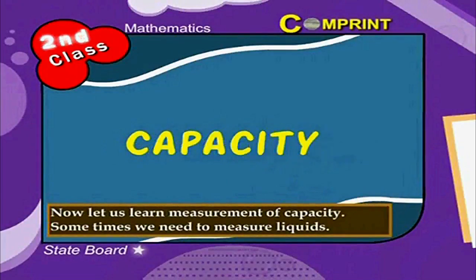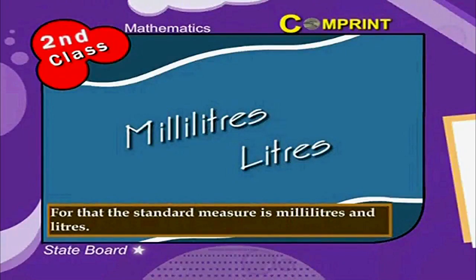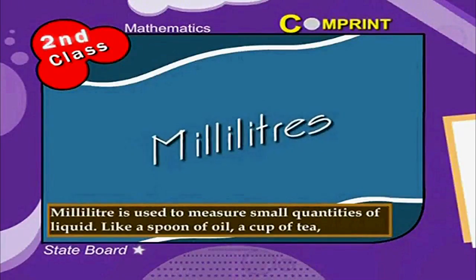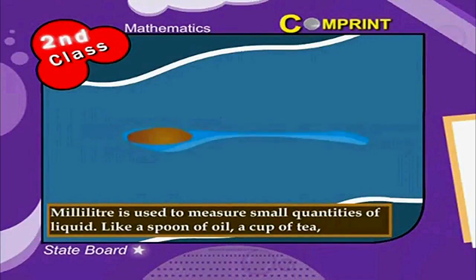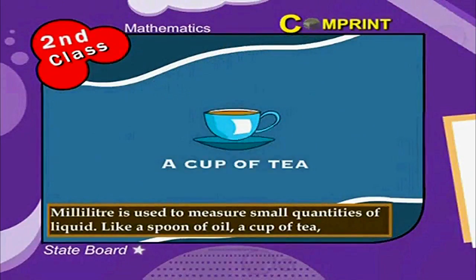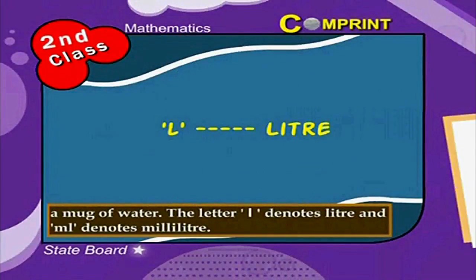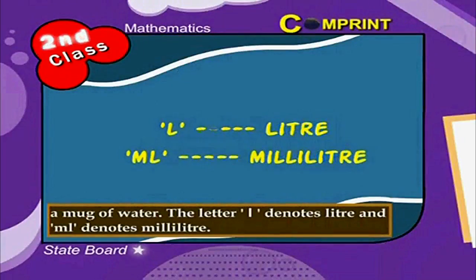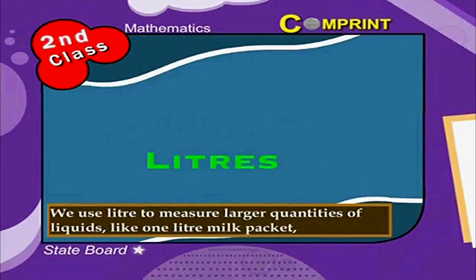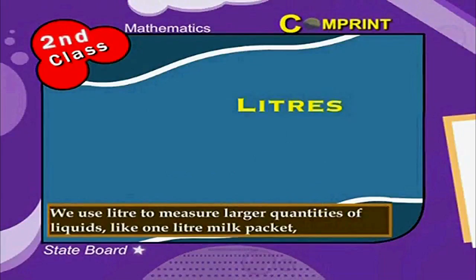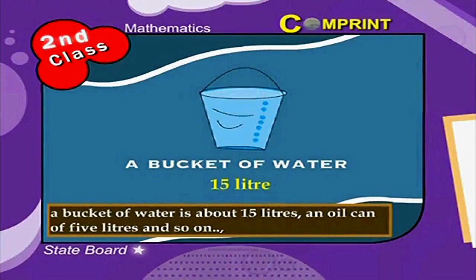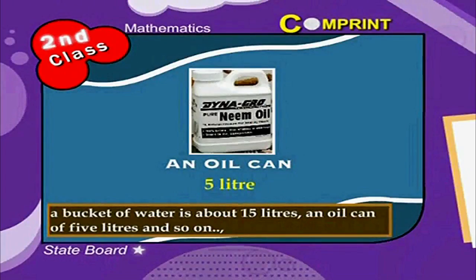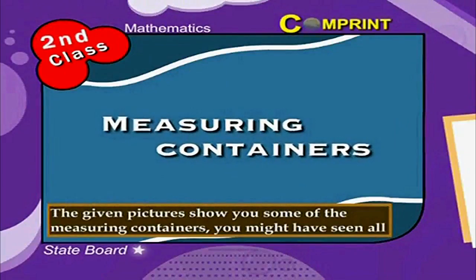Now let us learn measurement of capacity. Sometimes we need to measure liquids. For that, the standard measures are milliliters and liters. Milliliters is used to measure small quantities of liquids like a spoon of oil, a cup of tea, a mug of water. The letter L denotes liter and ML denotes milliliters. We use liters to measure larger quantities of liquids, like a 1 liter milk packet, a bucket of water is about 15 liters, and an oil can of 5 liters.